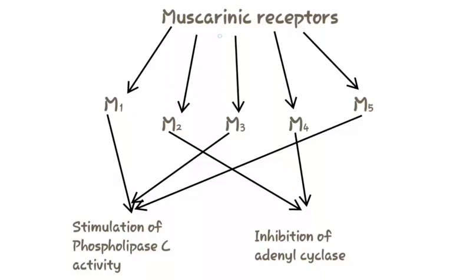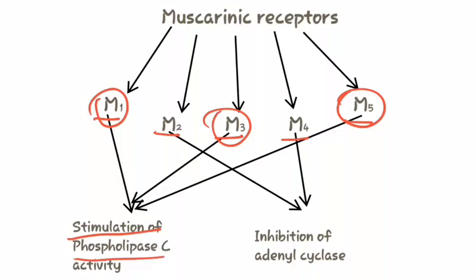Muscarinic receptors can be further classified into five types: M1, M2, M3, M4, and M5. Now the odd numbered receptors (M1, M3, and M5) cause stimulation of phospholipase C activity, and the even numbered muscarinic receptors (M2 and M4) cause inhibition of adenyl cyclase.